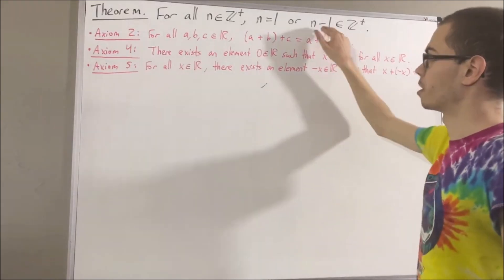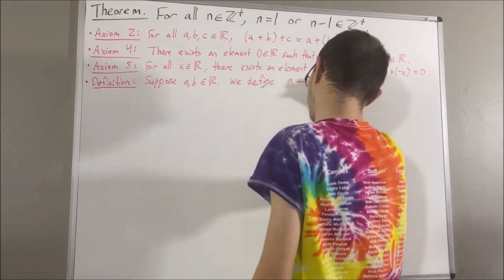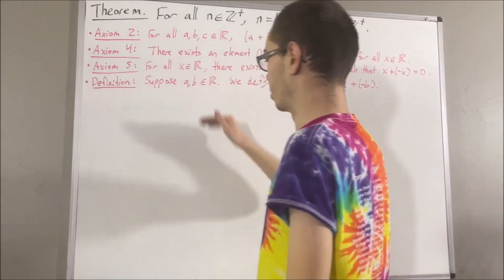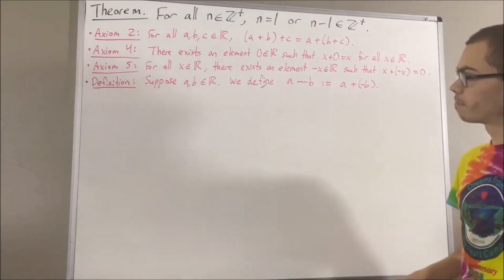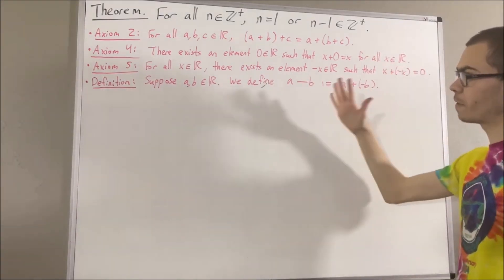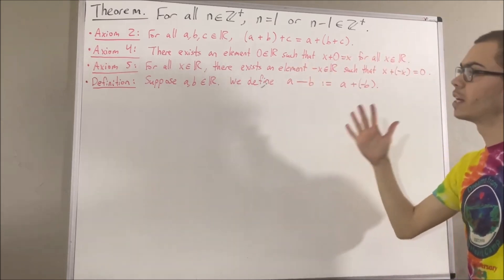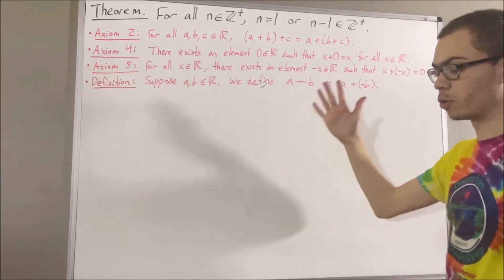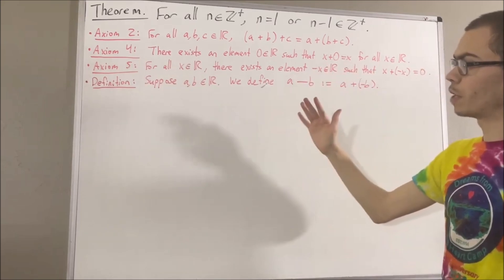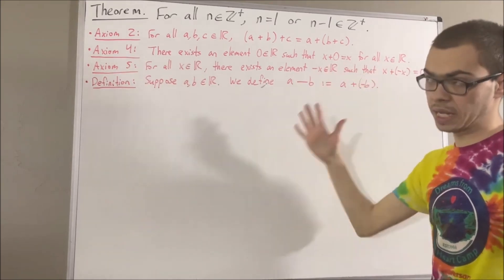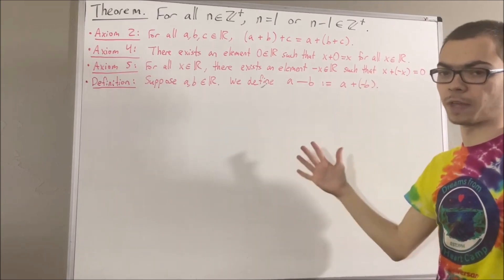Also, our definition of subtraction is as follows: suppose a and b are real numbers, we define a minus b to be a plus the negative of b. And also, we define the positive integers as a subset of the real numbers, and we have shown that the principle of mathematical induction holds for the positive integers. So, if we're trying to prove a statement p holds for all positive integers, then we can use induction to prove that.